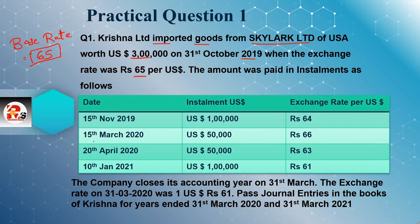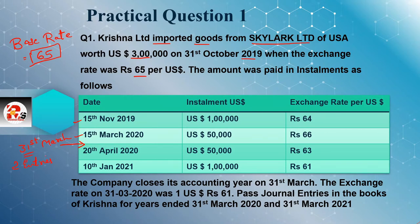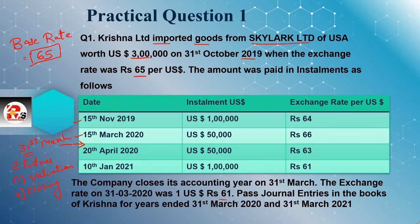Installment dates में 15 November और 15 March में कोई problem नहीं है। लेकिन 20 April और 10 January के लिए एक important date है — 31st March। 31st March को हम valuation और closing entries करते हैं। The company closes its accounting year on 31st March, इसलिए 31st March का rate भी दिया जाएगा।